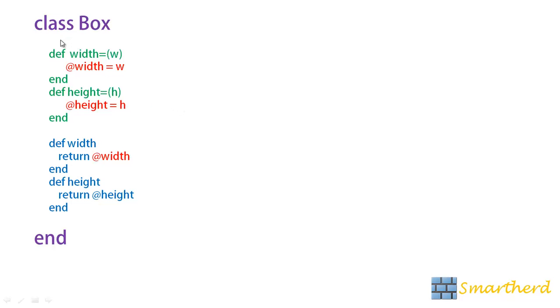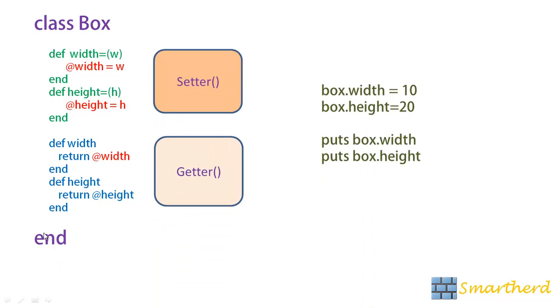Earlier we were writing these bunch of codes class box, this is setter, this is getter and end of function. Along with these codes box.width equal to 10, these are calling the setters and these two lines of code is getting the value from the getters.